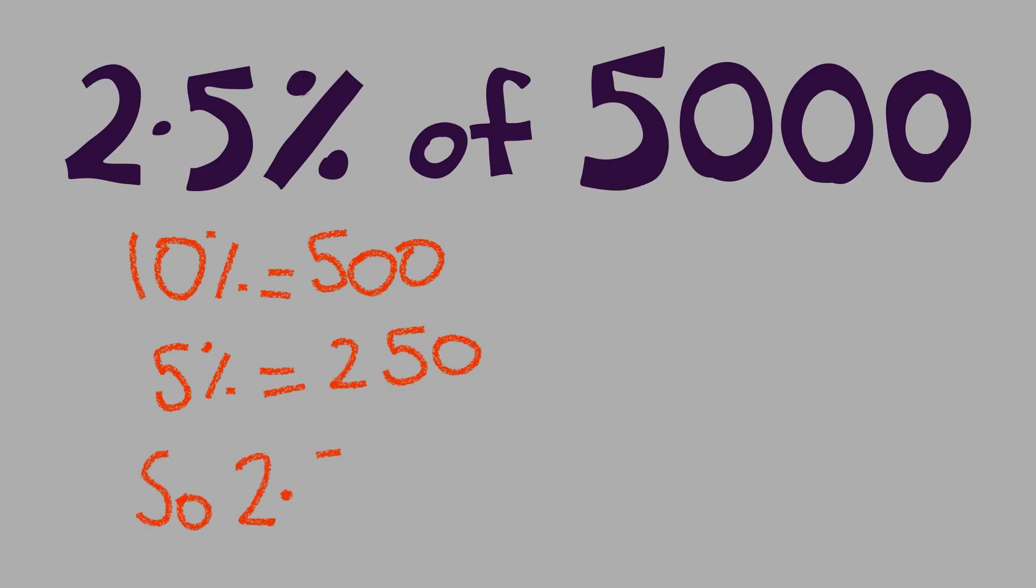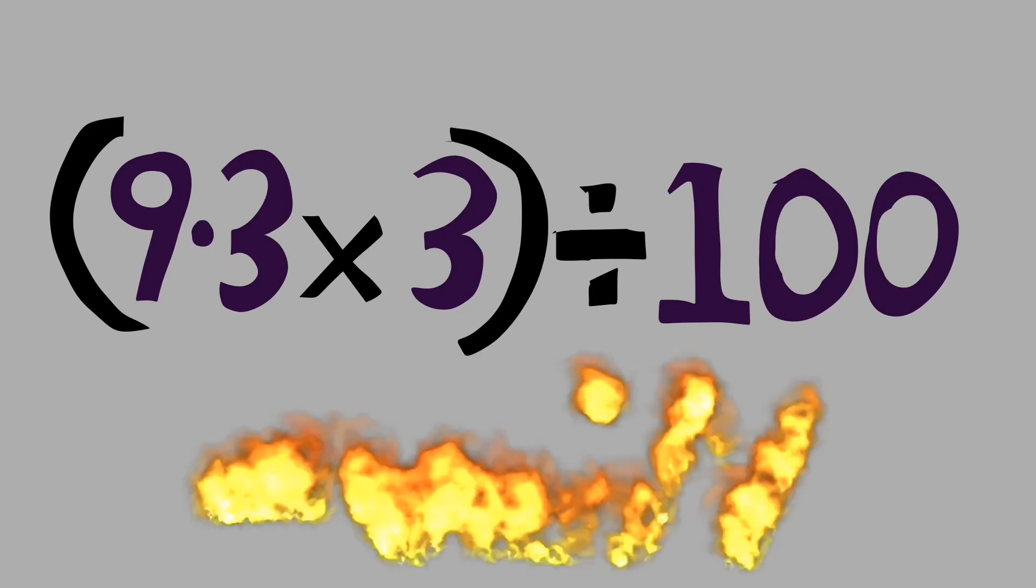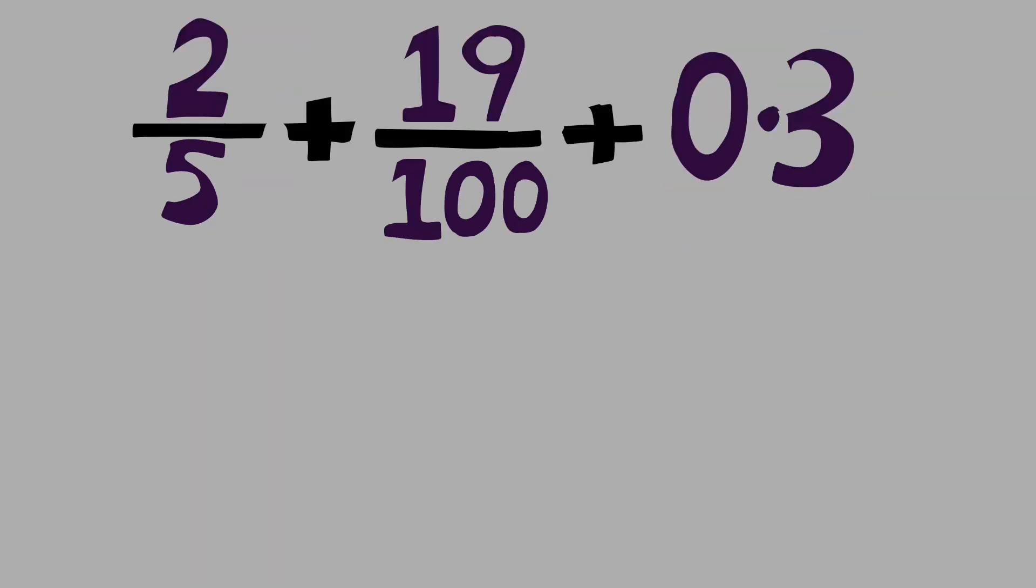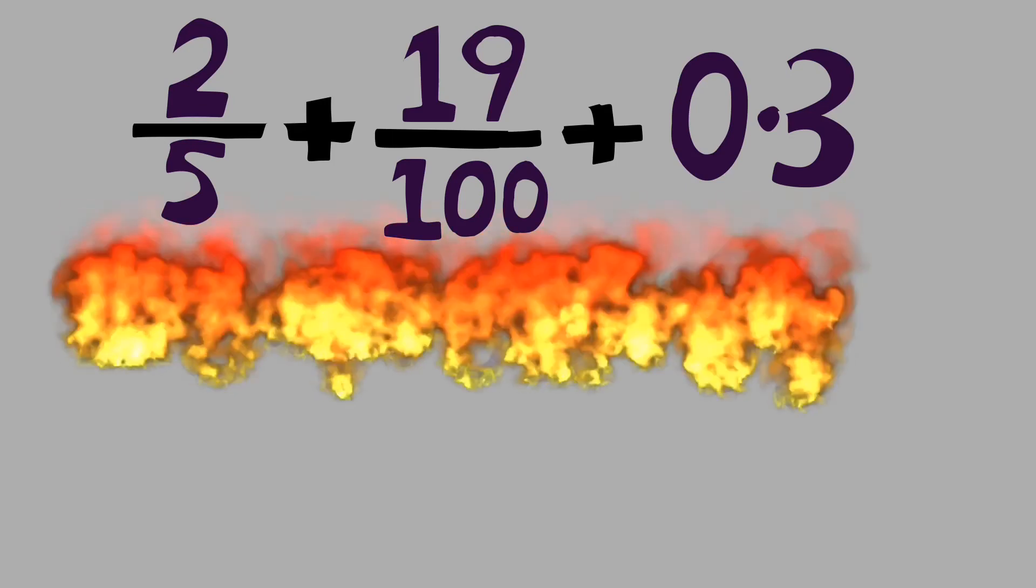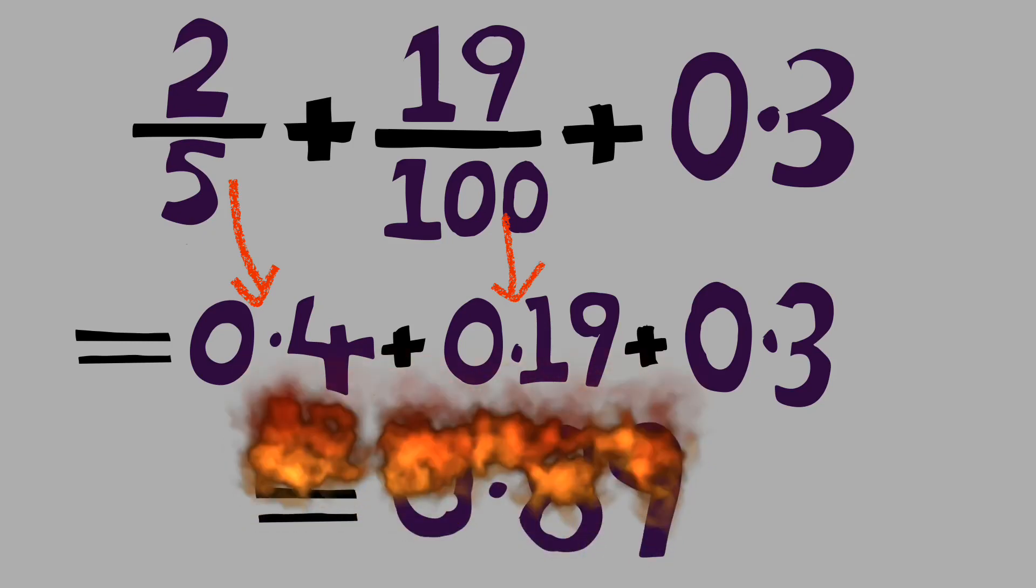9.3 times 3: 27.9. As you can see here, 27.9, and then you're going to divide that by 100. So we have 2/5 plus 19/100, so that's 0.4, the same as saying 2/5, and then 19/100, same as saying 0.19. We add all these decimals together now and we're left with 0.89.